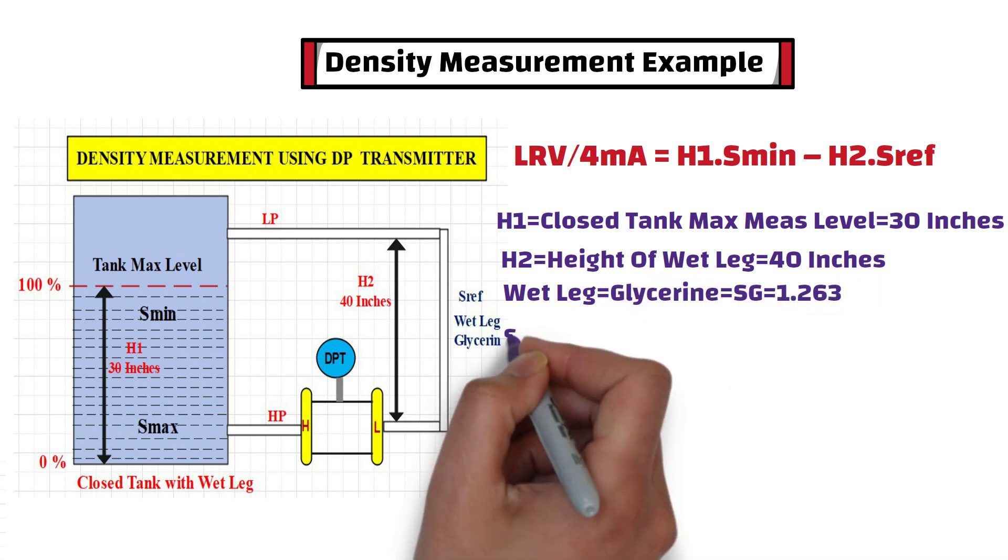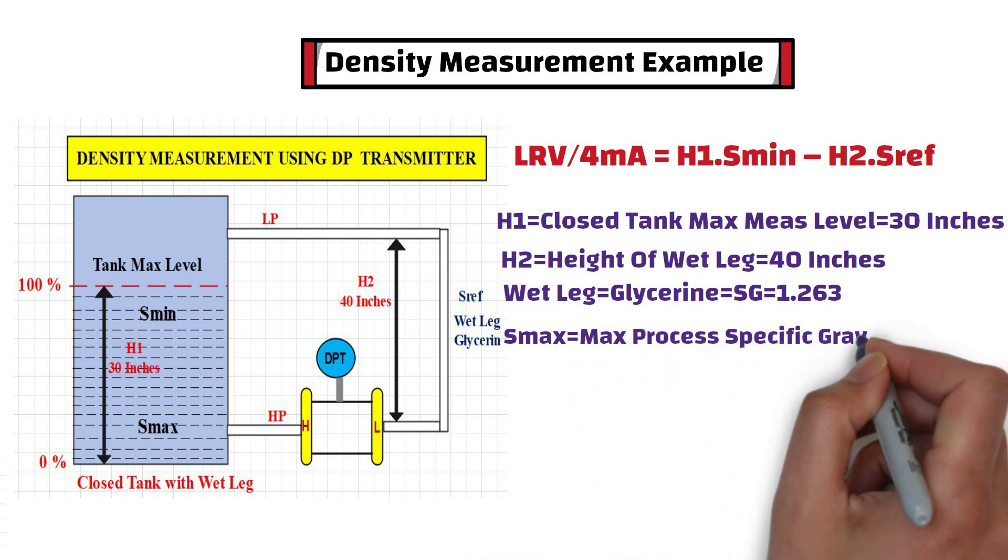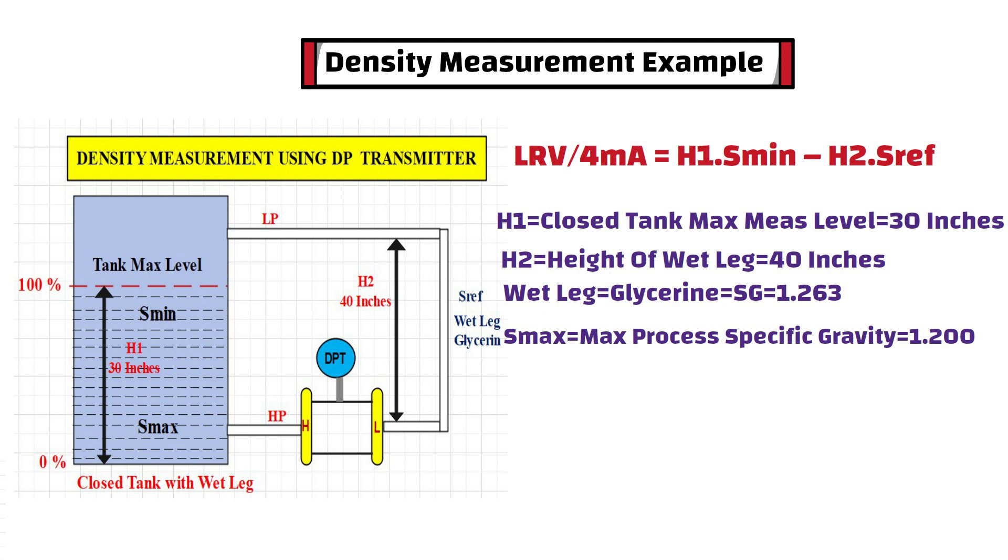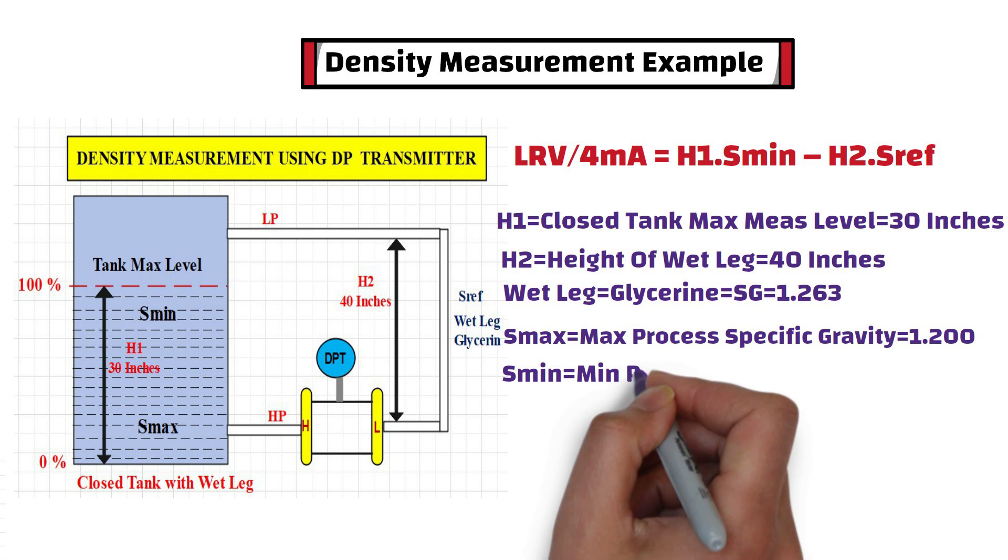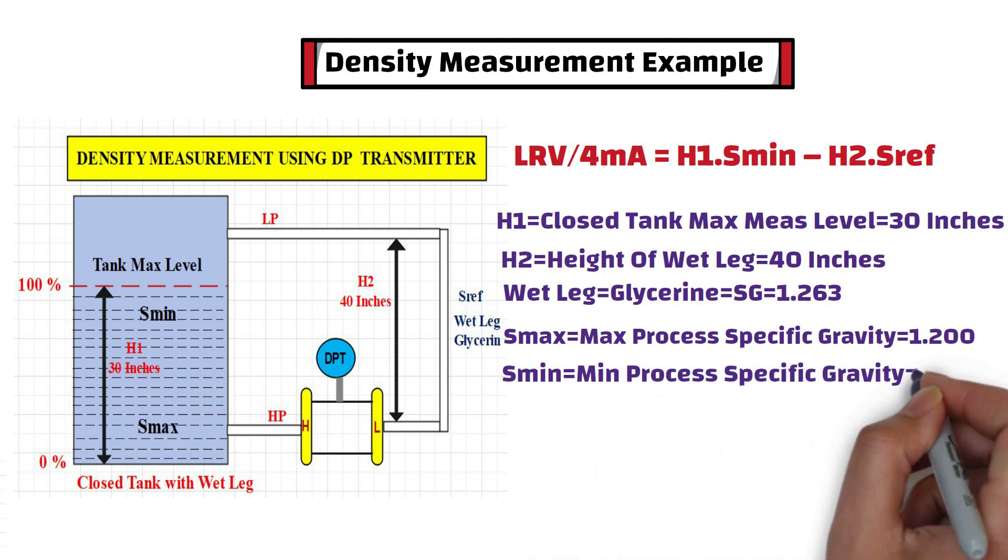Smax is maximum process-specific gravity, which is 1.2 in this example. You can find process-specific gravity values from process datasheets. Similarly, Smin is the minimum process-specific gravity, which is 1 in this example.